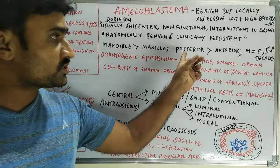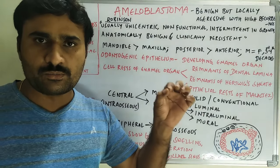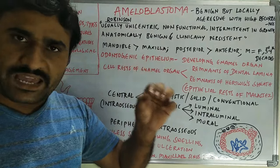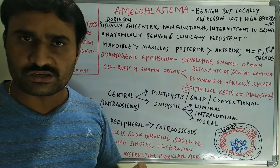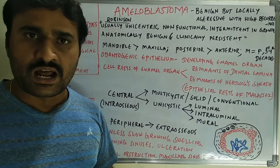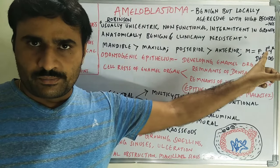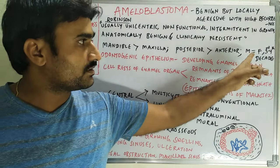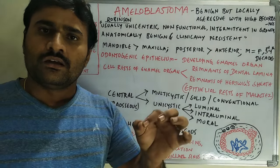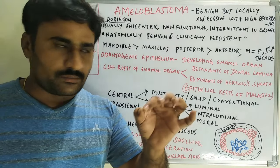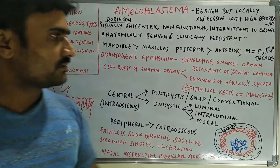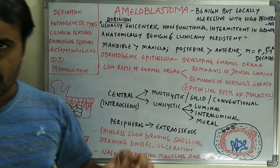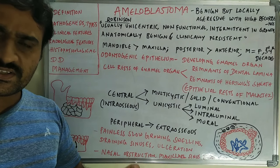The mandible is more commonly involved than the maxilla, and the posterior part of the mandible — that is the mandibular posterior body and ramus-angle region — is the commonly involved region. There is equal predilection in male and female and the third and fourth decade patients are commonly seen.